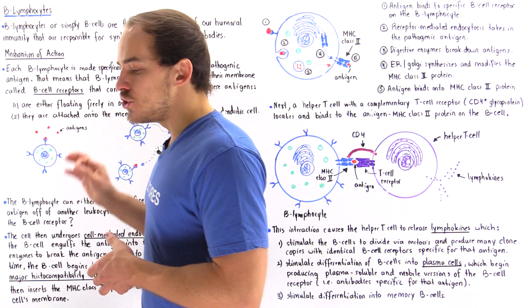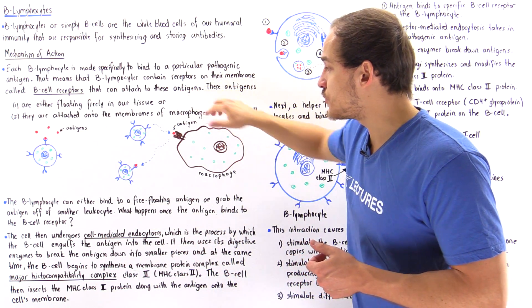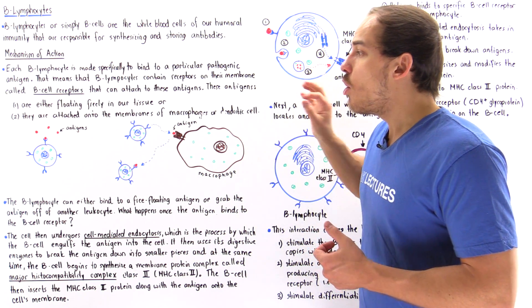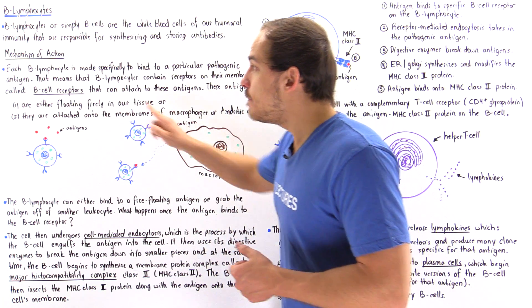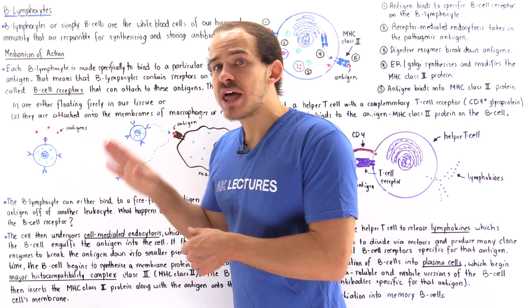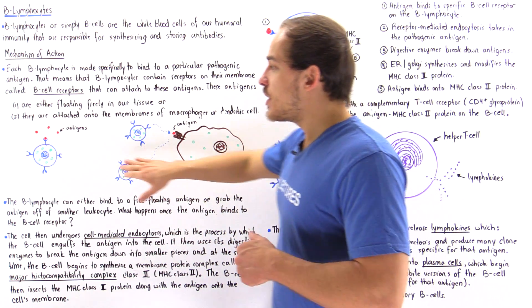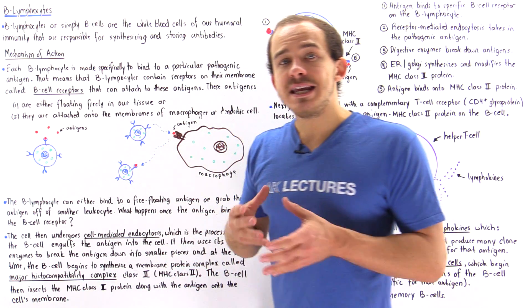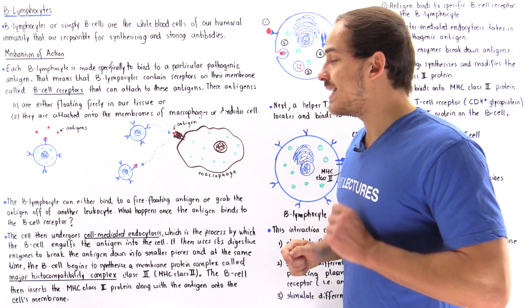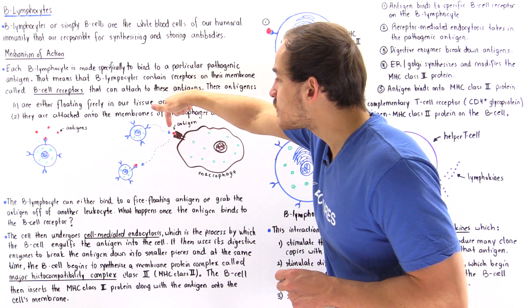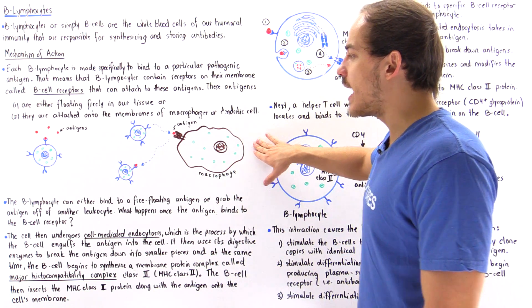Anytime we have an antigen in our body, either floating around or bound to some other type of leukocyte, we have a specific B lymphocyte with B cell receptors that can bind to that particular pathogenic antigen. The B lymphocyte can either pick up antigens floating in our system or grab the antigen off of a macrophage or other leukocyte.